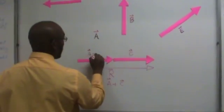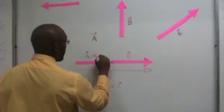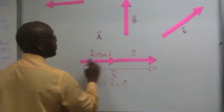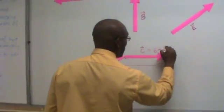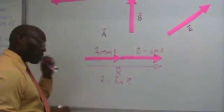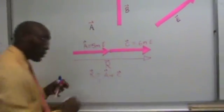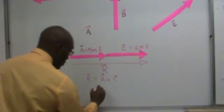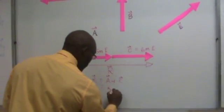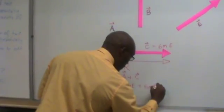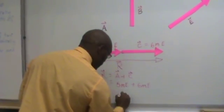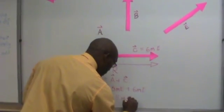If A is equal to 5 meters east and C is equal to 6 meters east, then the resultant, which is the sum of both vectors, is 5 meters east plus 6 meters east, which will give us 11 meters east.